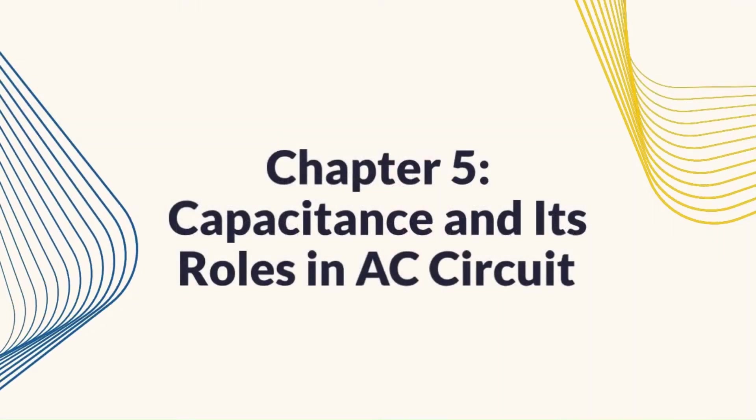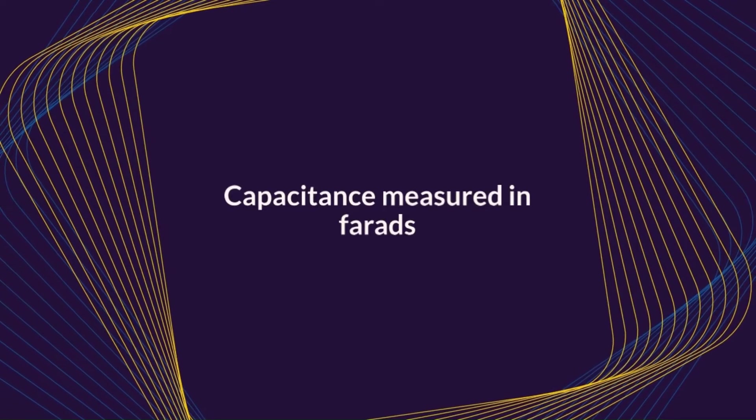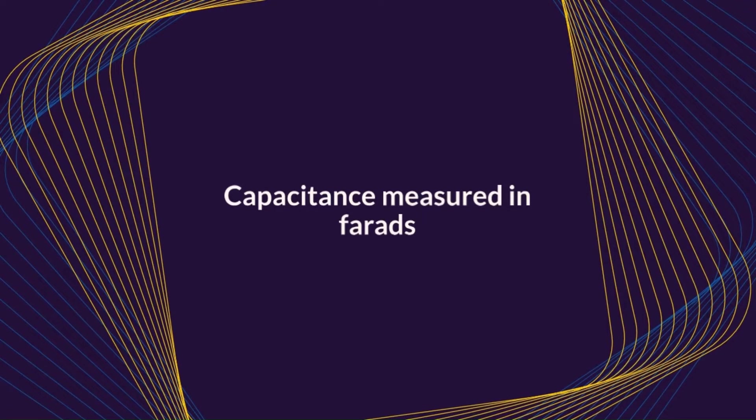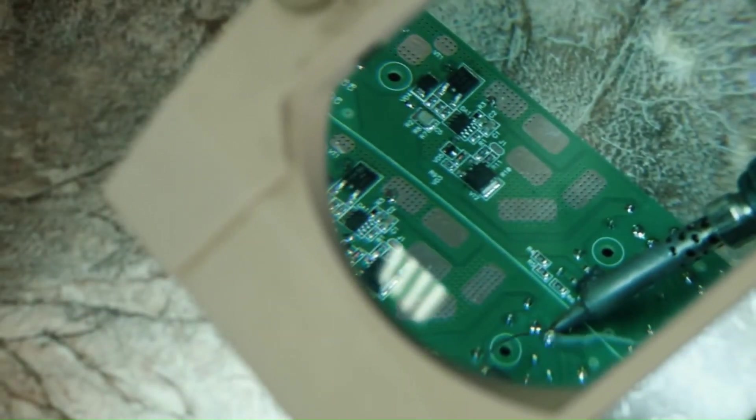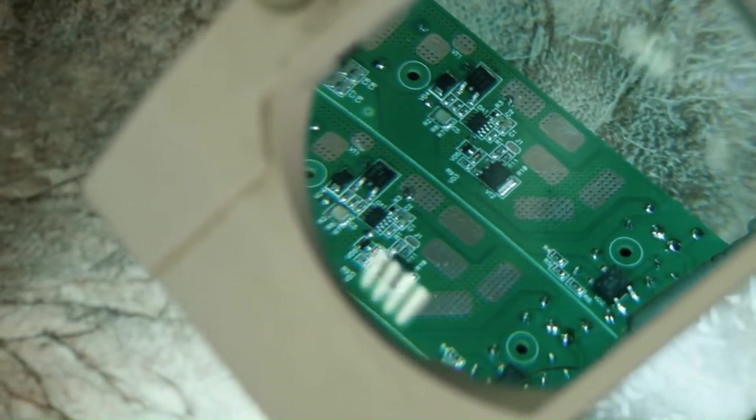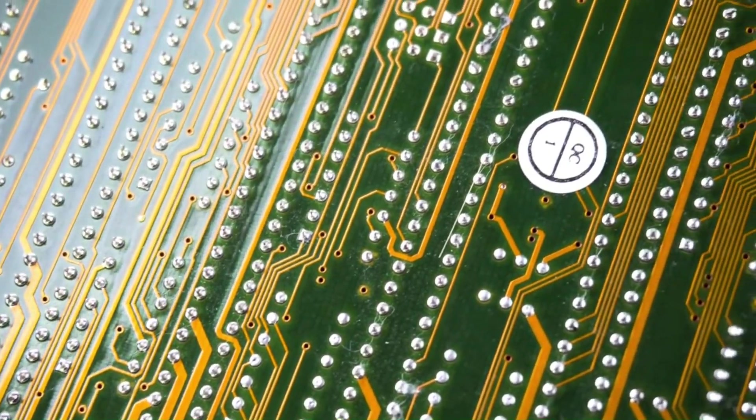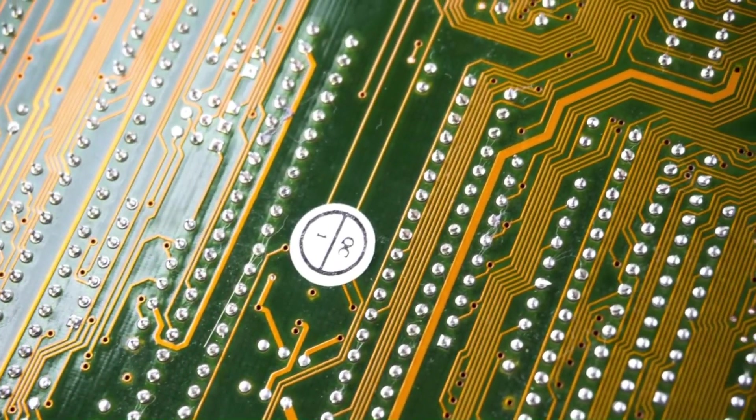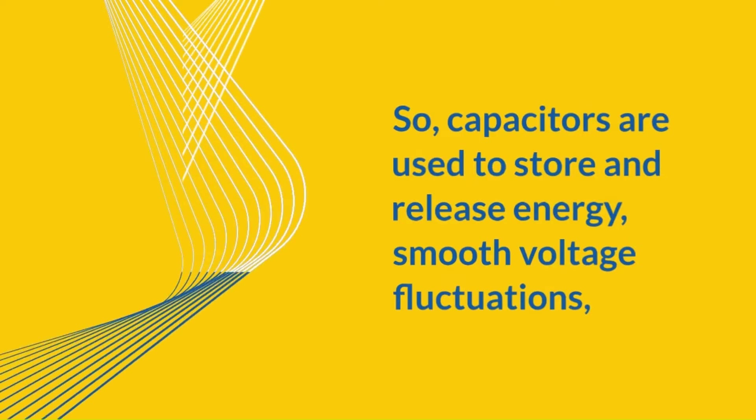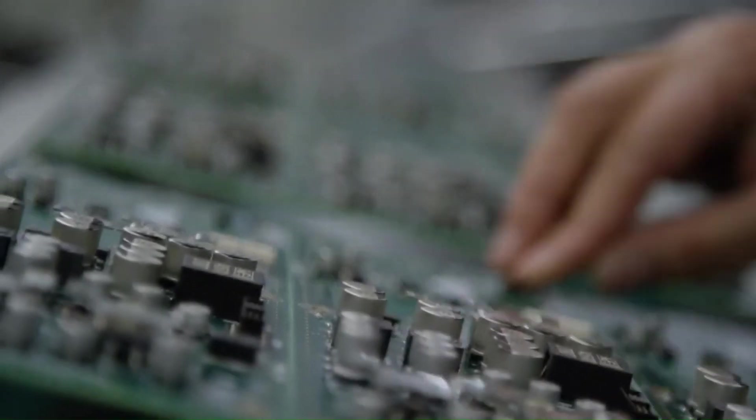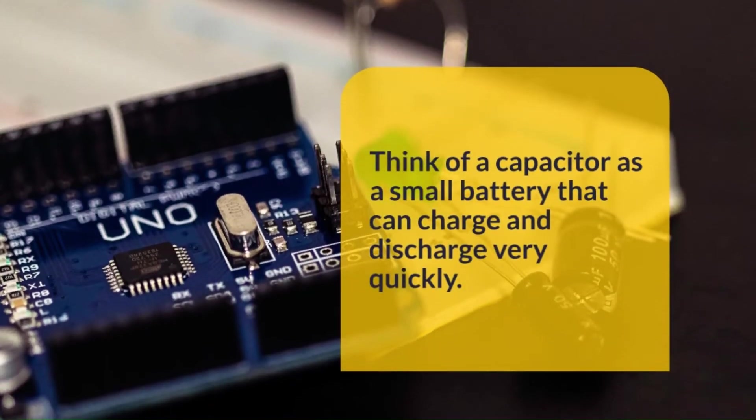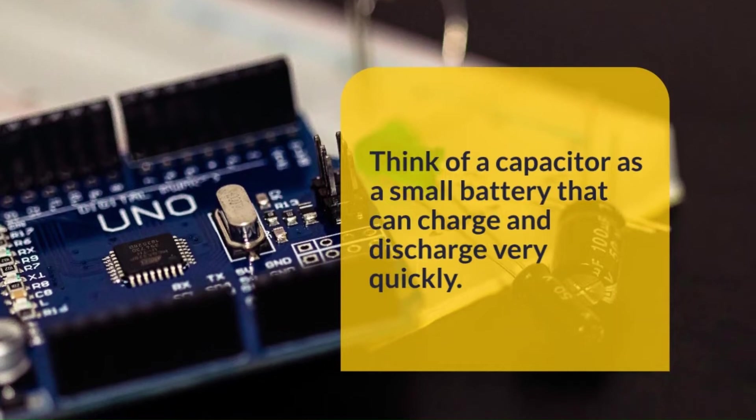Chapter 5: Capacitance and its role in AC circuit. Next we have capacitance measured in farads and it has the ability of a component to store electrical energy in an electric field between two conductive plates separated by an insulated material or sometimes we call it a dielectric. Capacitors are used to store and release energy, smooth voltage fluctuations and filter out signals in the circuit. Think of a capacitor as a small battery that can charge and discharge very quickly.